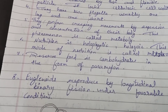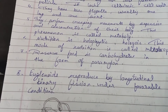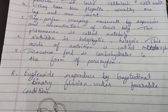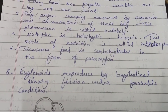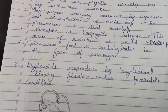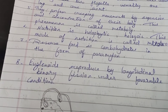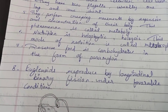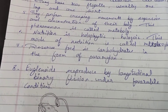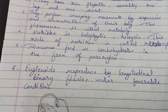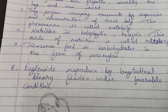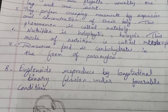If we talk about food reserve, it is stored in the form of a polysaccharide. The food reserve is carbohydrate-based. This polysaccharide is called paramylon.